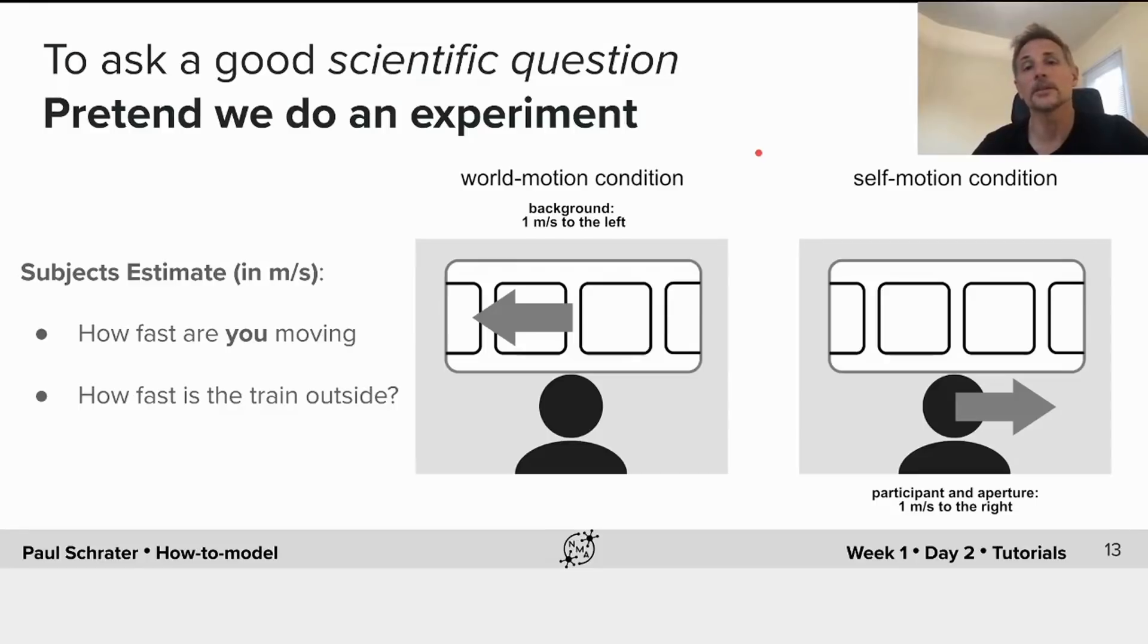Sometimes the train car that they're in is actually moving. That is what we'd call the self-motion condition. Other times, they're stationary and the train car next to them, out the window, is moving. And we'll call that the world motion condition.